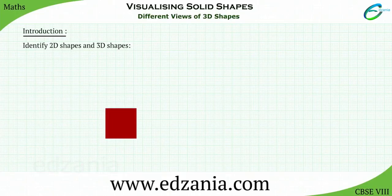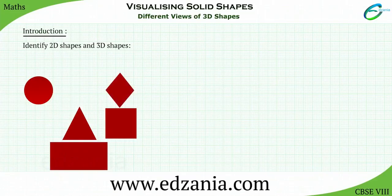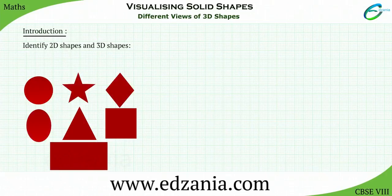Square, Triangle, Circle, Rectangle, Rhombus, Oval, Star, etc. are all 2D shapes. Whereas Cube,